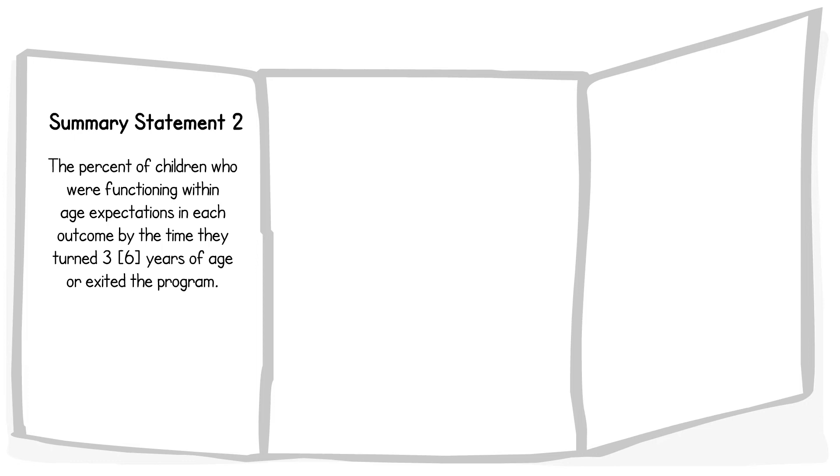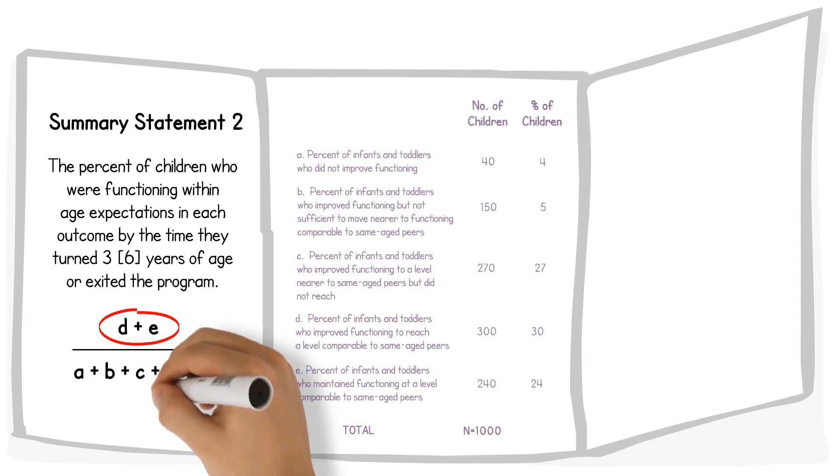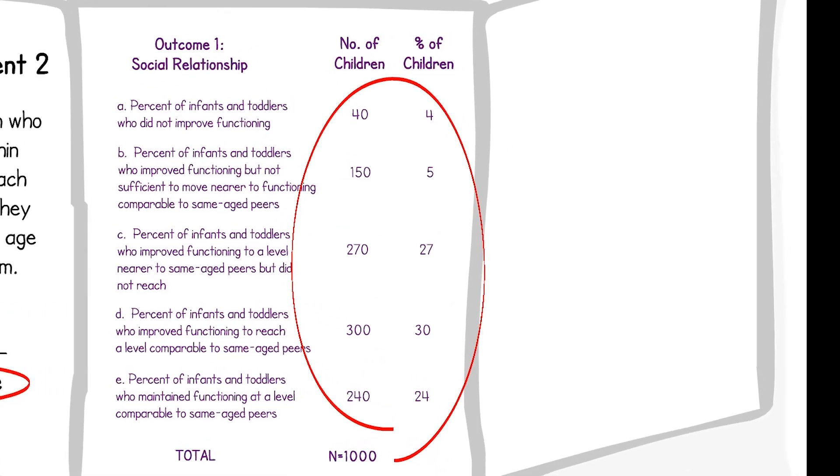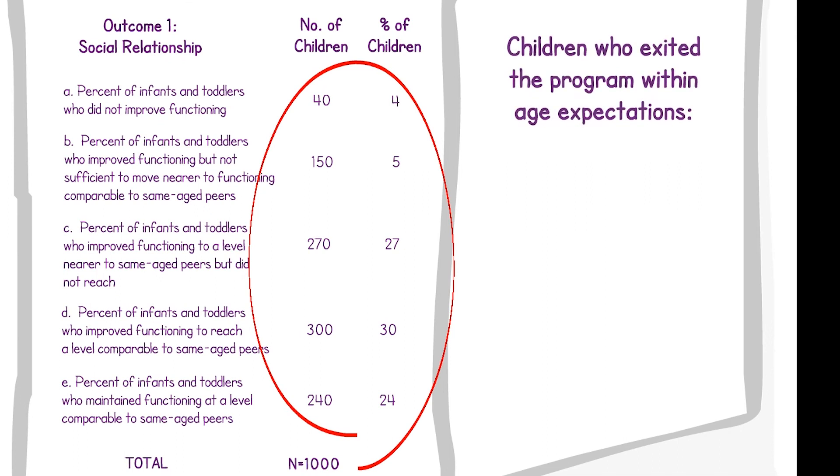Summary statement two is calculated by adding the number of children in categories D and E, and dividing that number by the total number of children across all categories. This summary statement is often described as children who exited the program within age expectations.